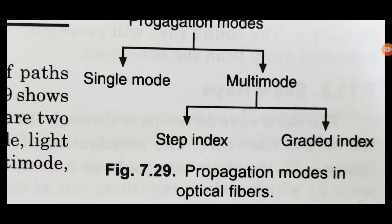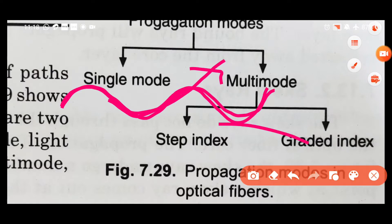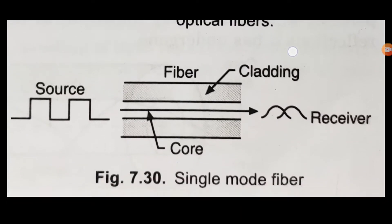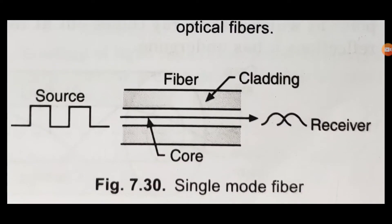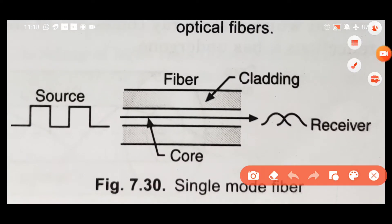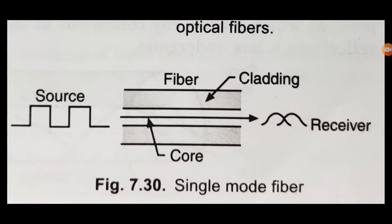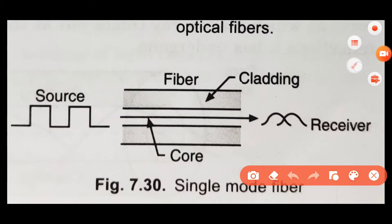Let's talk about single mode fibers and optical fiber structures. The optical fiber has a cladding as the outer part, and in the middle is the core.